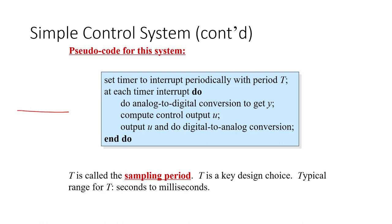The pseudo code of this system is like this: we set a timer to interrupt periodically every t milliseconds, then perform an analog-to-digital conversion, compute the control output, and then actuate it by performing a digital-to-analog conversion, which is the reverse process.